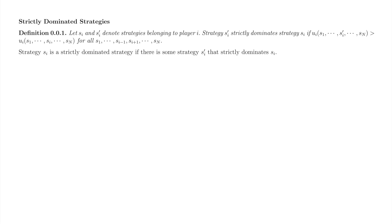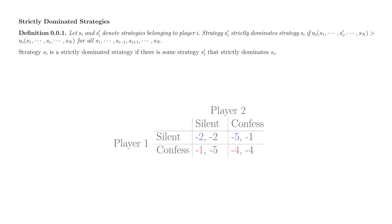We say SI is a strictly dominated strategy if there is some other strategy SI' that strictly dominates SI. Another way we could describe a strictly dominated strategy is to say that it is never best. Let's use this definition to show that confess strictly dominates silent in Prisoner's Dilemma. If player II is silent, player I's payoff from confess is minus 1, which is strictly greater than player I's payoff from silent, minus 2.